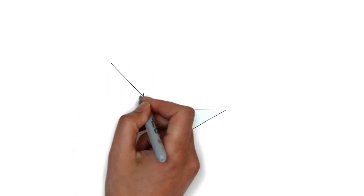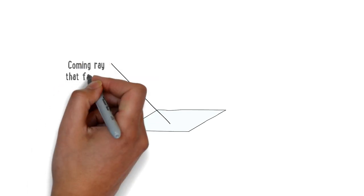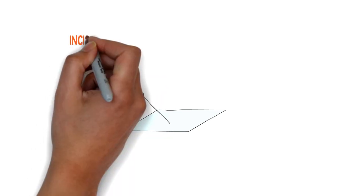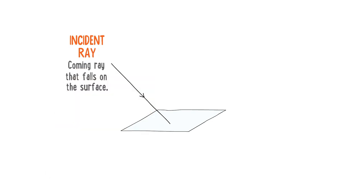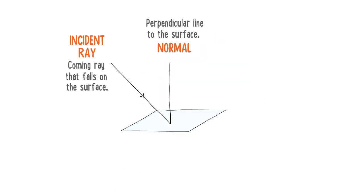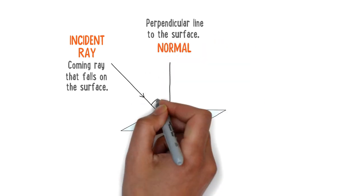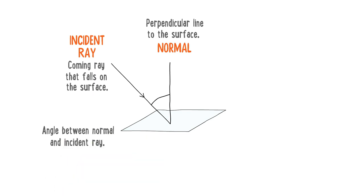Consider a smooth polished surface. Let a light ray come from a source and hit this smooth surface. In physics, this coming ray that falls on the surface is called the incident ray. If we draw a perpendicular line to the surface, this perpendicular line is called the normal. The angle between the incident ray and the normal at the point of incidence is called the angle of incidence.